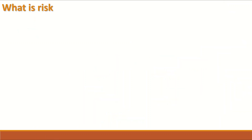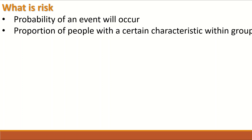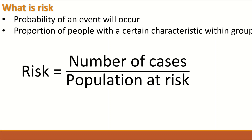So what is risk? Risk is the probability of an event occurring. It is the proportion of individuals with a certain characteristic within a group. Risk can be represented in this equation: the number of cases divided by the population at risk.